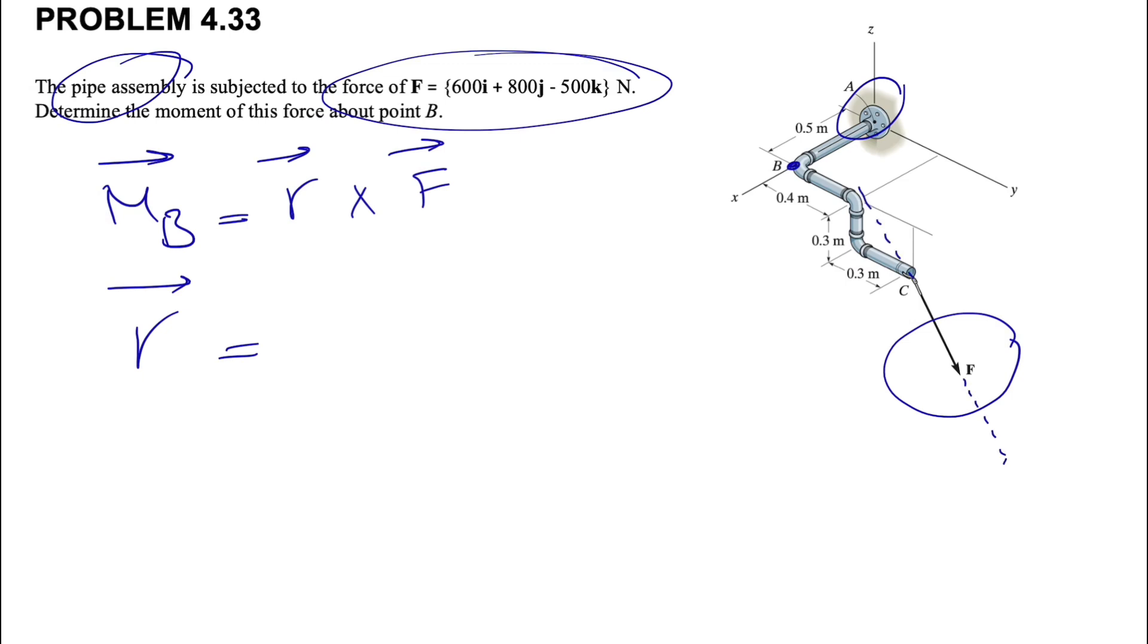So any line that connects this point B to the line of action of the force can be our R. And since the easiest one is the C, since we have the coordinates of C, we're going to go with point C.